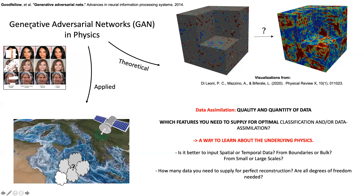We can work with these tools in two different ways: either with an applied point of view, where we consider a very specific problem like reconstruction of satellite data and aim to optimize the generative adversarial network as best as possible for the best reconstruction — so we are problem oriented. Or we can have a more theoretical approach and use this network to ask questions about the properties of these flows.